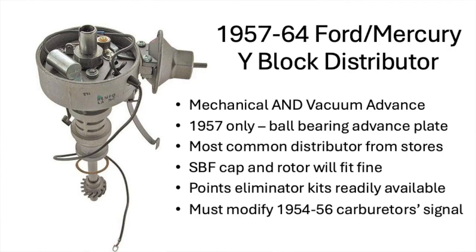Why? Because there is no mechanical advance in the 54, 55, and 56 distributors, and because the vacuum signal from your modern carburetor — 57 to modern day — is proportionately sending out a weaker ported vacuum signal that's just enough to get you off idle. It's very important that if you upgrade your carburetor, you also swap out your distributor for a 1957 on-up model that will give you mechanical advance.